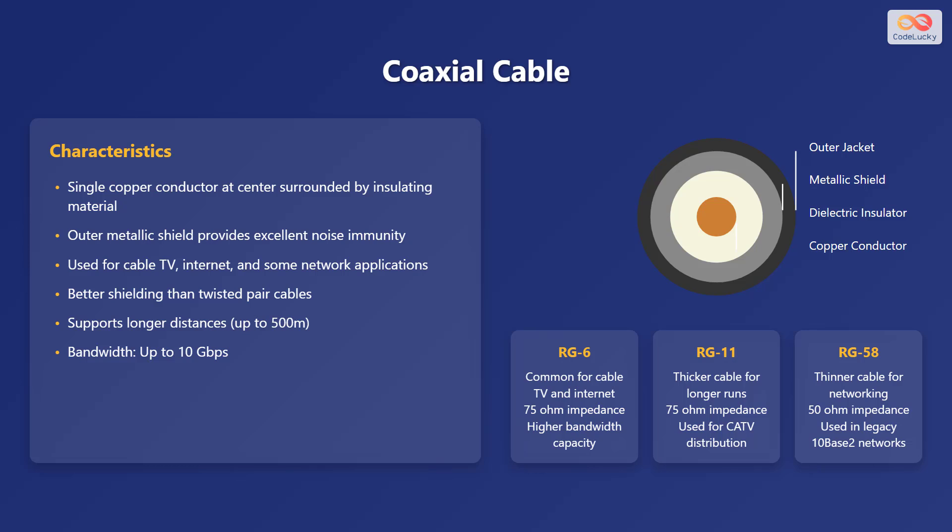Now let's discuss coaxial cable. Coaxial cable is another type of guided media, known for its distinctive design. It consists of a single copper conductor at the center, surrounded by insulating material, and an outer metallic shield that provides excellent noise immunity. Coaxial cable is commonly used for cable television, internet connections, and some network applications. It offers better shielding compared to twisted pair cables and supports longer distances of up to 500 meters. The bandwidth capacity of coaxial cable can reach up to 10 gigabits per second.